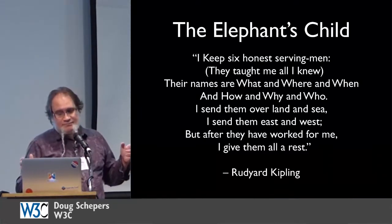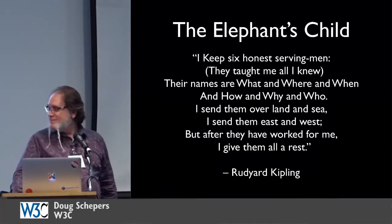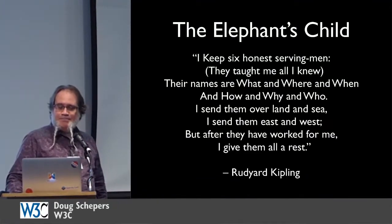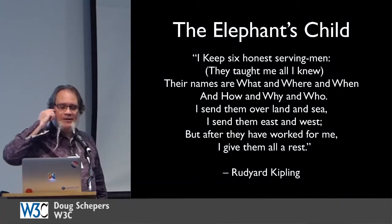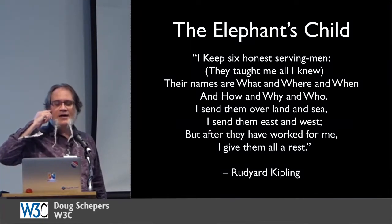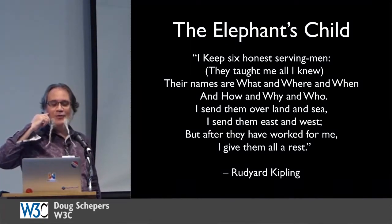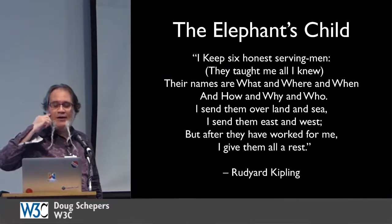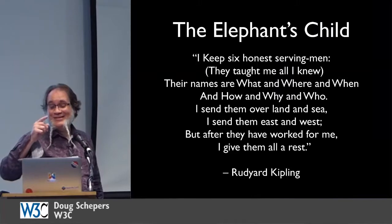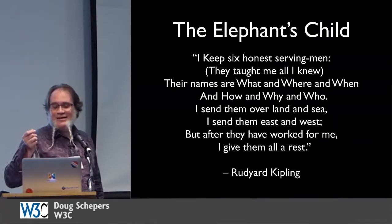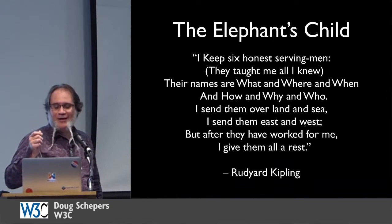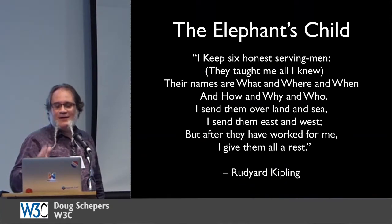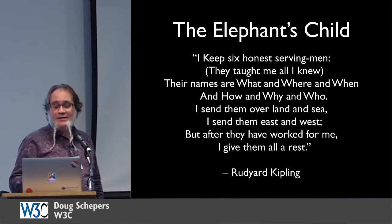Rudyard Kipling said, in his story The Elephant's Child: 'I keep six honest serving men, they taught me all I know. Their names are what and where and when and how and why and who. I send them over land and sea, I send them east and west, but after they have worked for me, I give them all a rest.' The theme of my presentation here is the five W's and H: who, what, when, where, why, how.